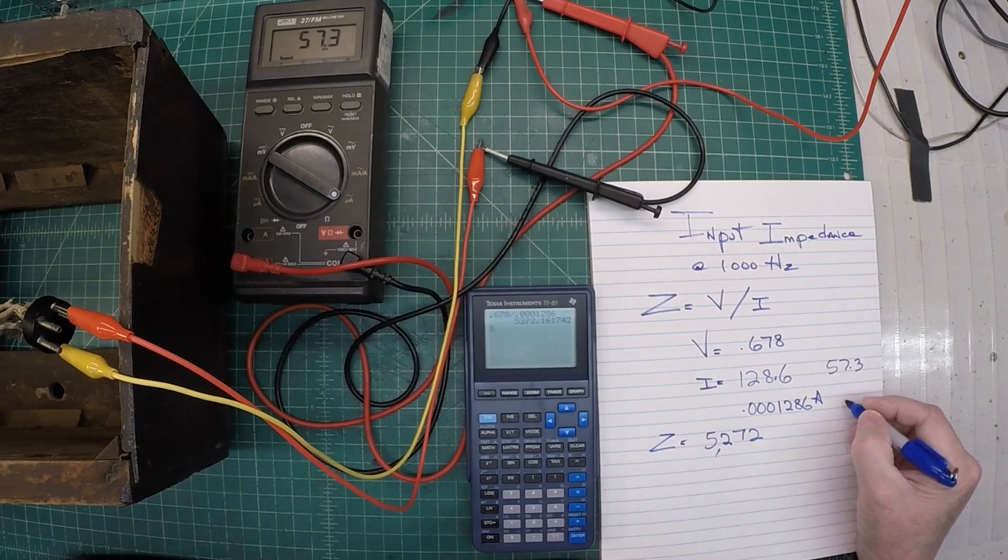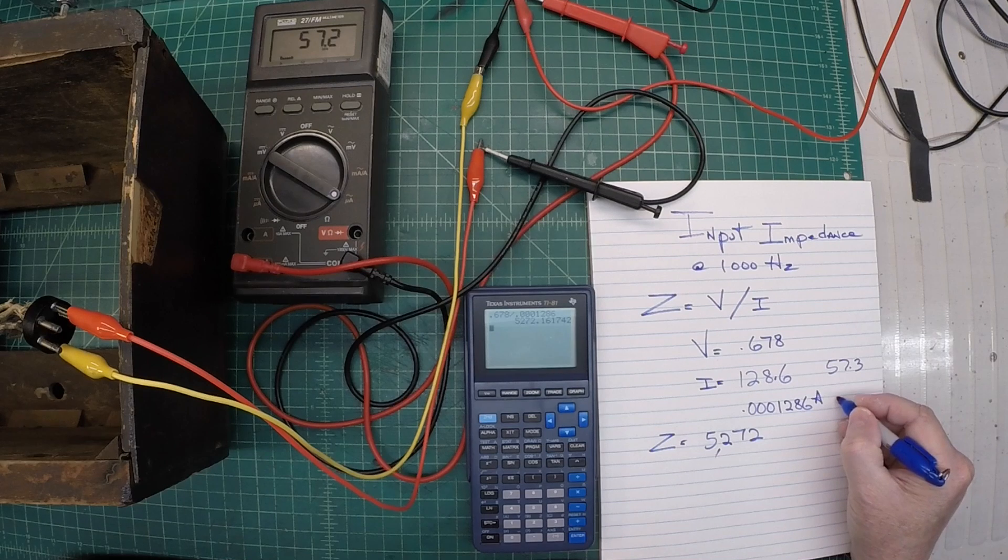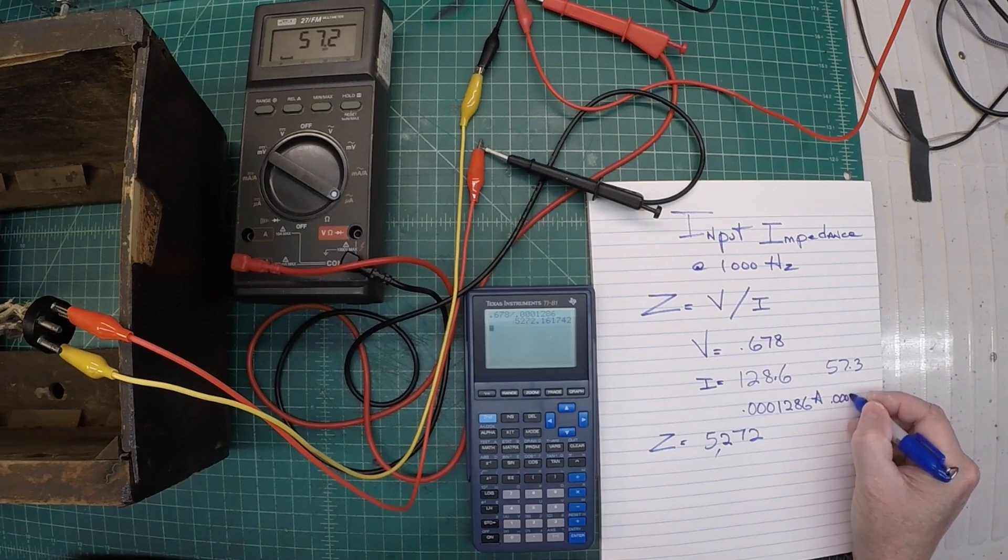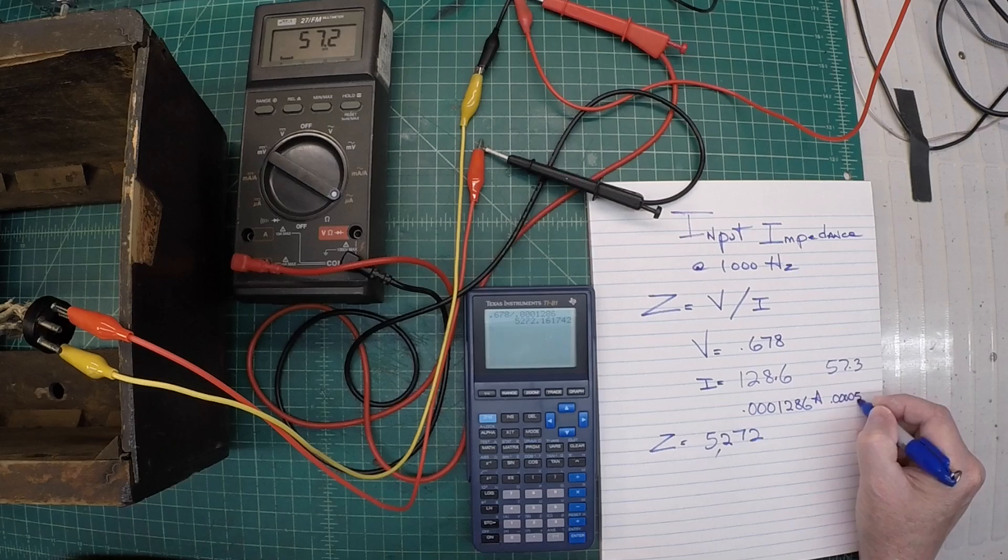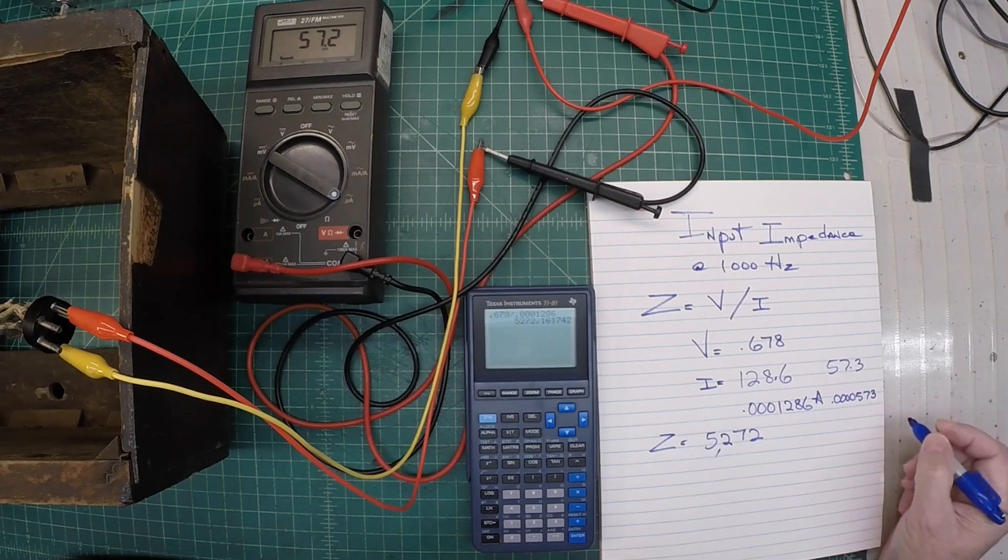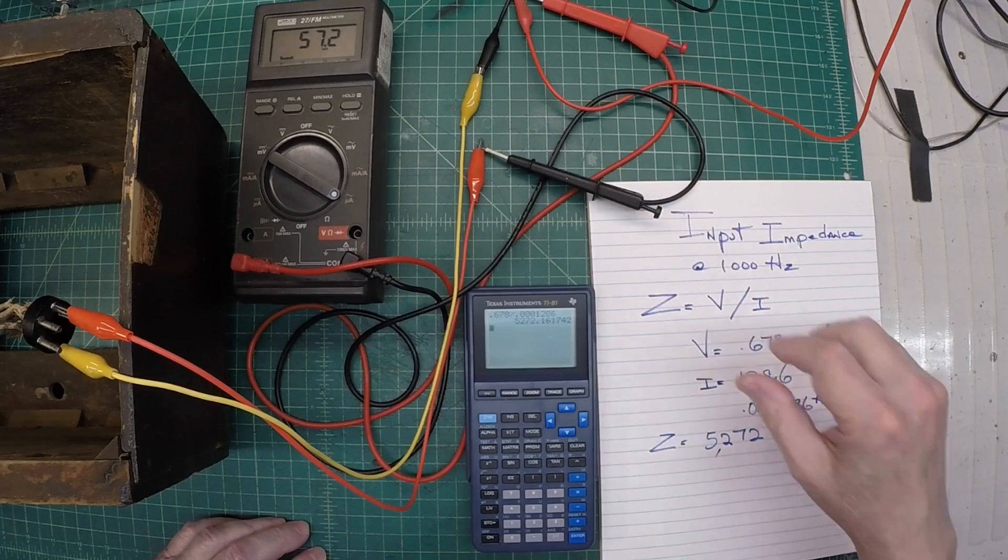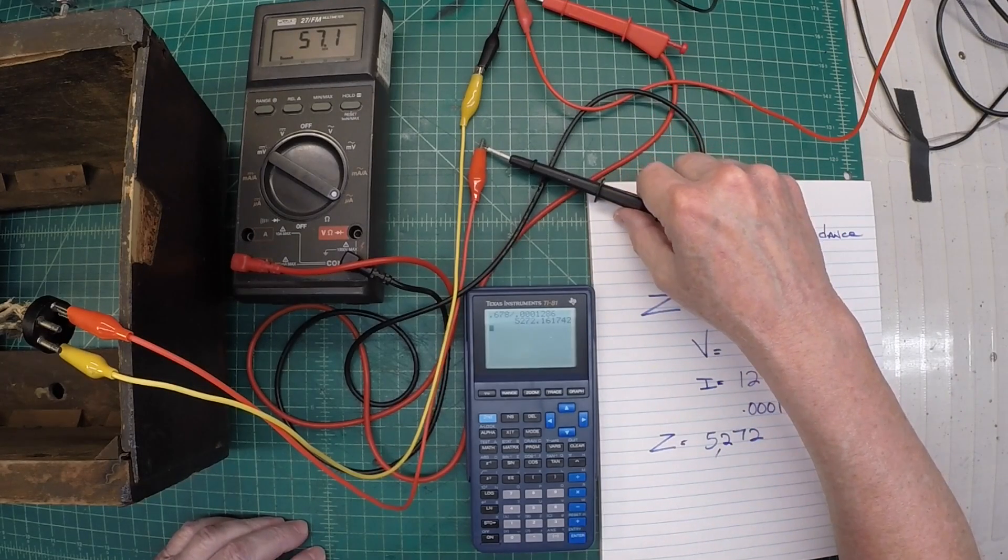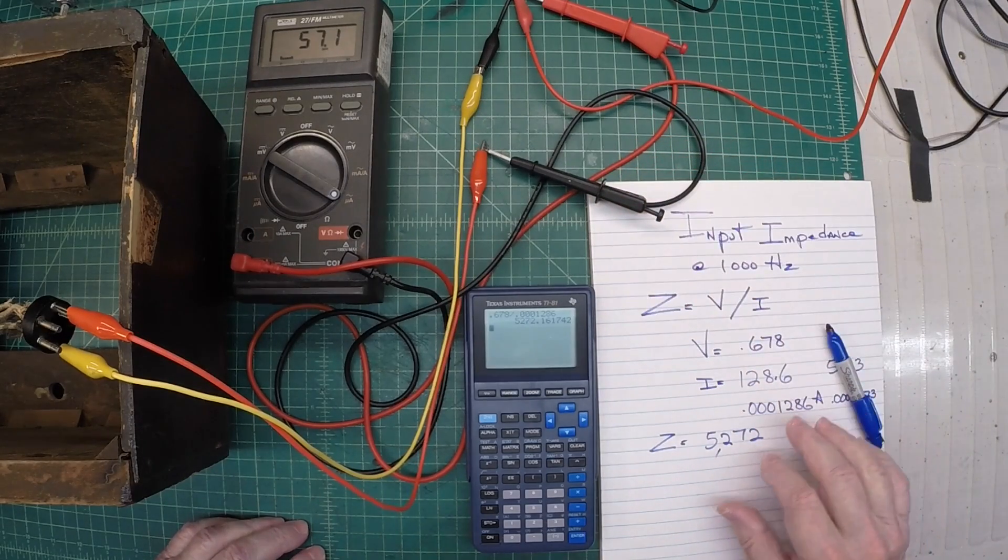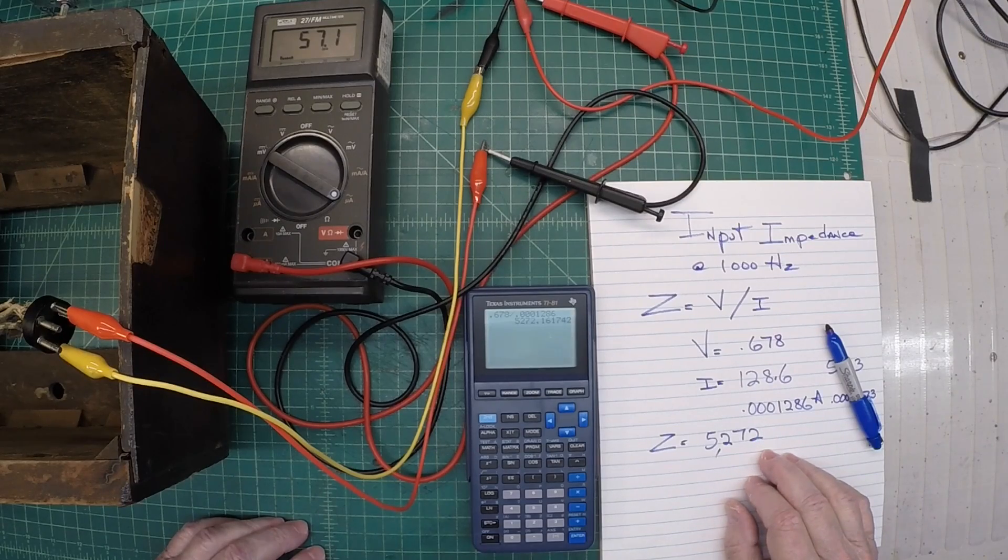And if we convert that back to amps itself, 0.0000573. Now let me hook everything back up here where we can measure the AC voltage itself. And then we'll do the math here and see what we end up with.